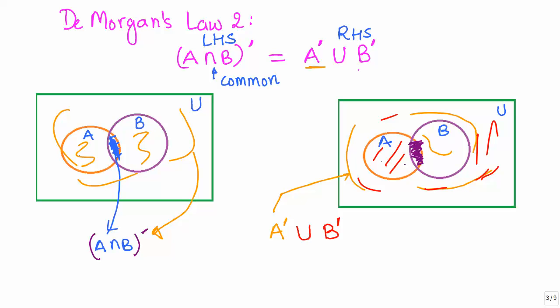So we get all the elements that are present in A and B, but not common to A and B, which is the same result that we got when we did the left-hand side operations.